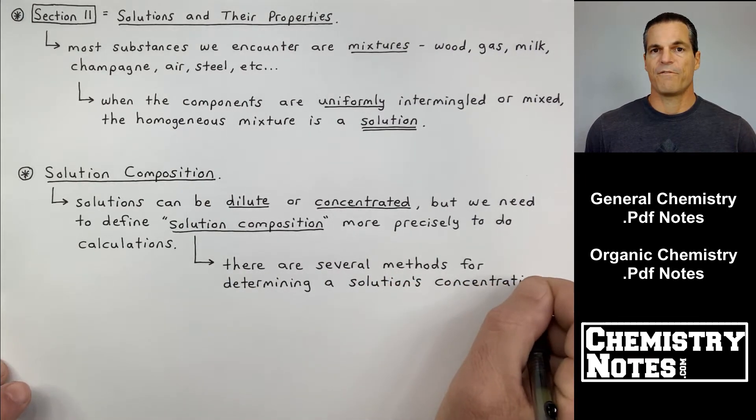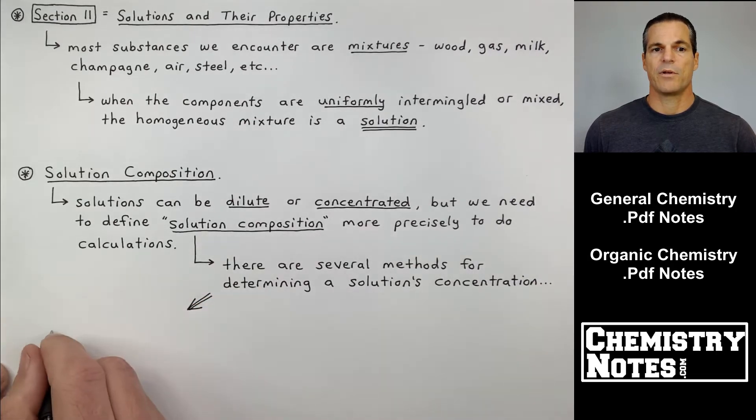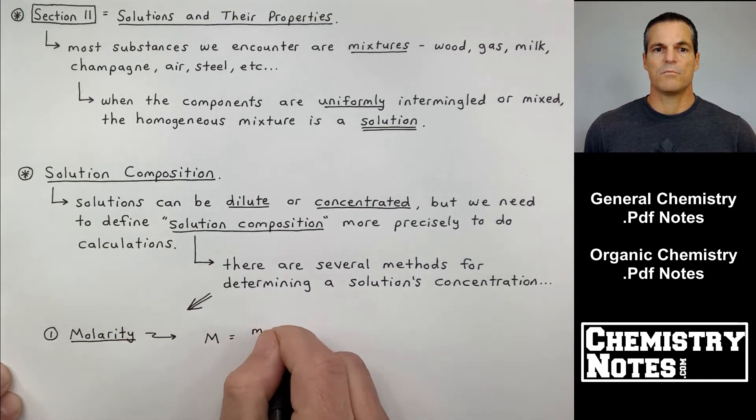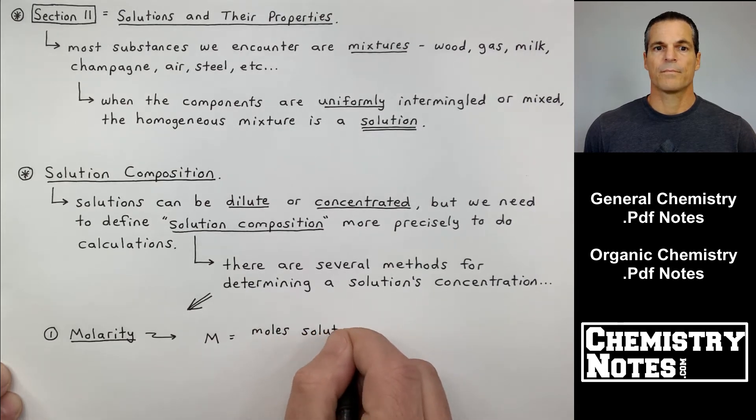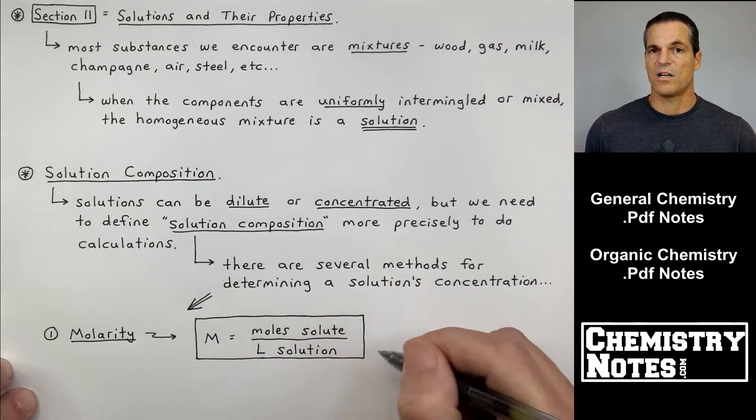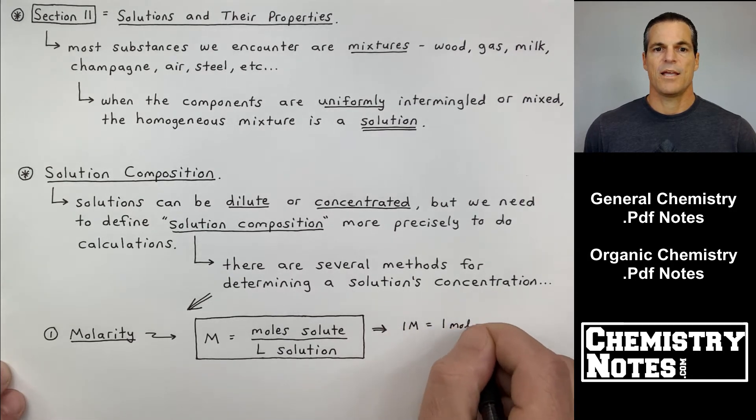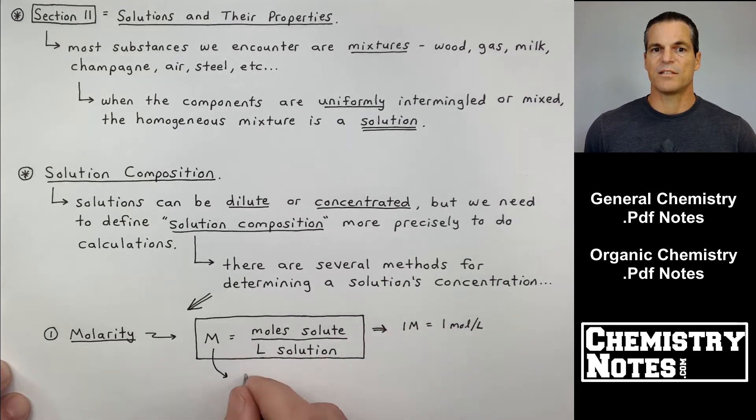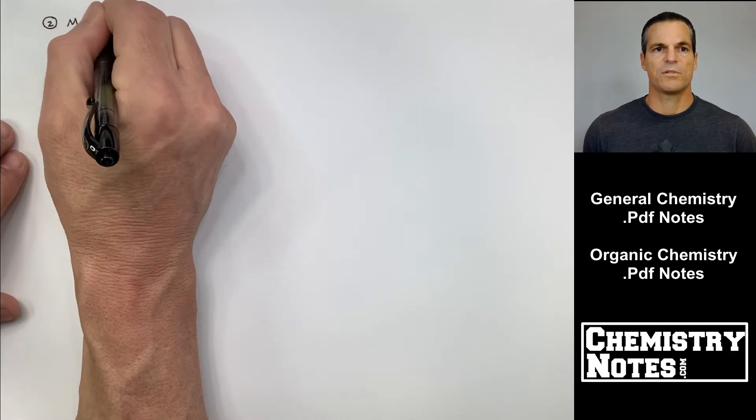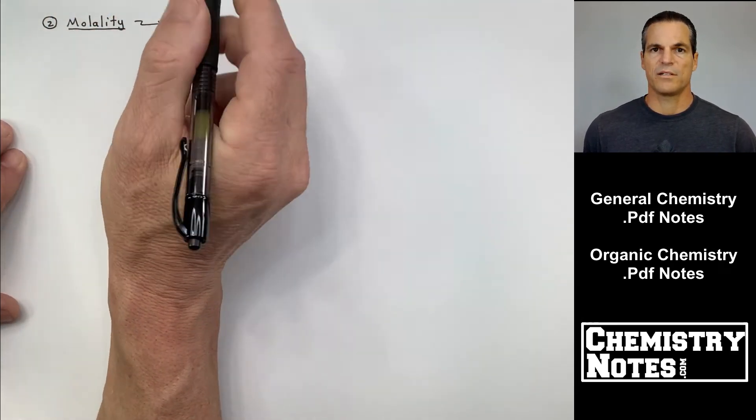So we need some sort of quantitative way of deciphering what solution composition is. There are several methods for determining a solution's concentration. The most popular by far is molarity. Molarity equals moles of solute divided by liters of solution. The solute is what gets dissolved. It's quite often a solid like NaCl or sugar. And the solvent is what does the dissolving. One molar is equal to one mole per liter.